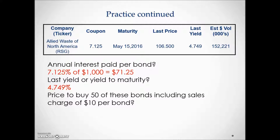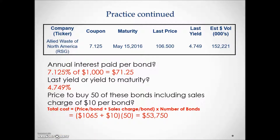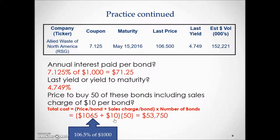Let's calculate the price to buy 50 of these bonds including a sales charge of $10 per bond. We look at the last price, which is a percentage, so to find the price per bond we multiply it by the par value of $1,000, giving us $1,065. Adding the $10 sales charge gives us $1,075 per bond. Since we're buying 50 bonds, we multiply by 50 — this is the total cost for the investor to purchase 50 Allied Waste of North America bonds.